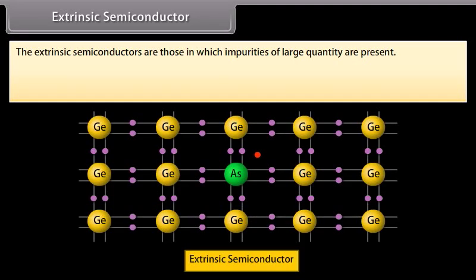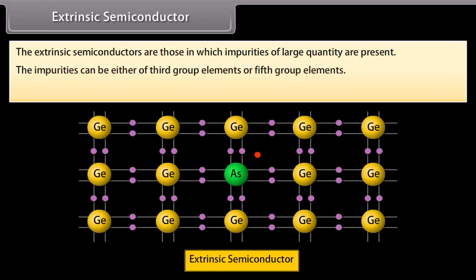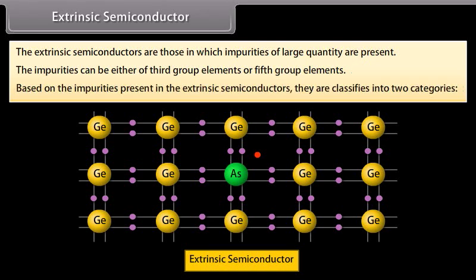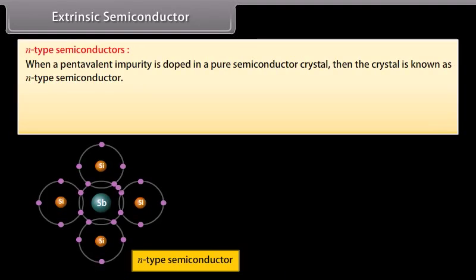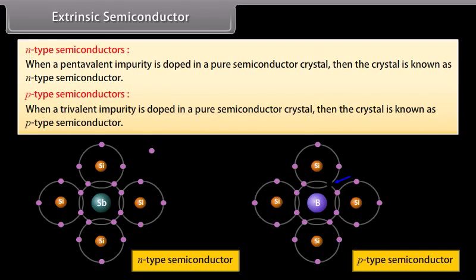Extrinsic semiconductors are those in which impurities of large quantity are present. The impurities can be either third group elements or fifth group elements. Based on the impurities present, extrinsic semiconductors are classified into two categories. N-type semiconductors: when a pentavalent impurity is doped in a pure semiconductor crystal, the crystal is known as N-type semiconductor. P-type semiconductor: when a trivalent impurity is doped in a pure semiconductor crystal, the crystal is known as P-type semiconductor.